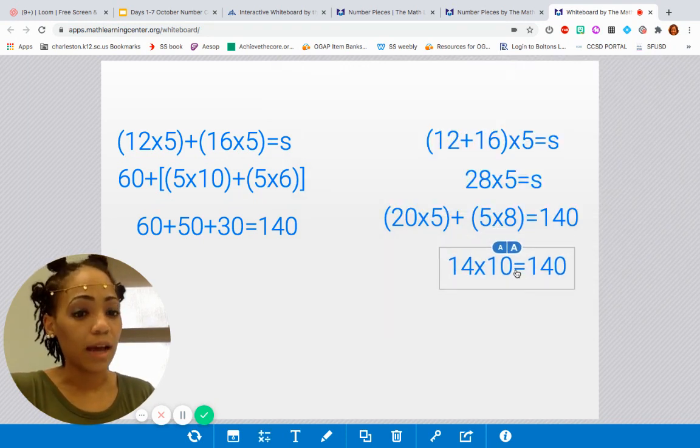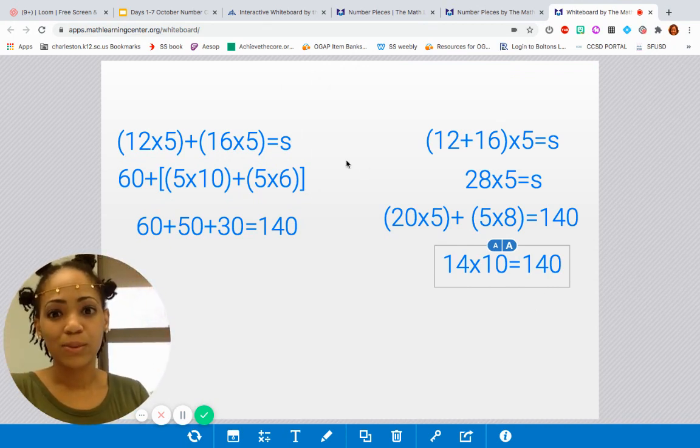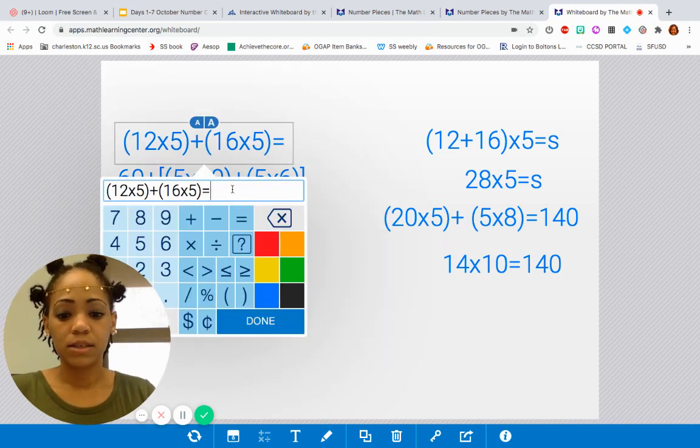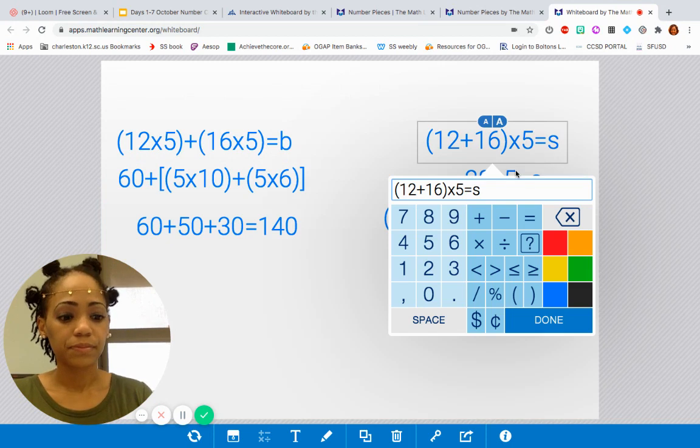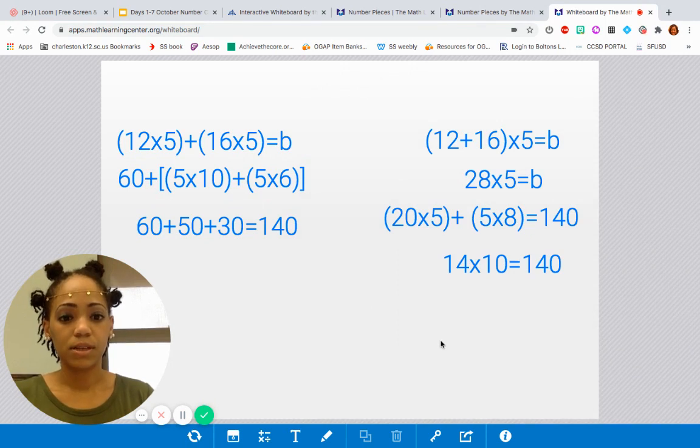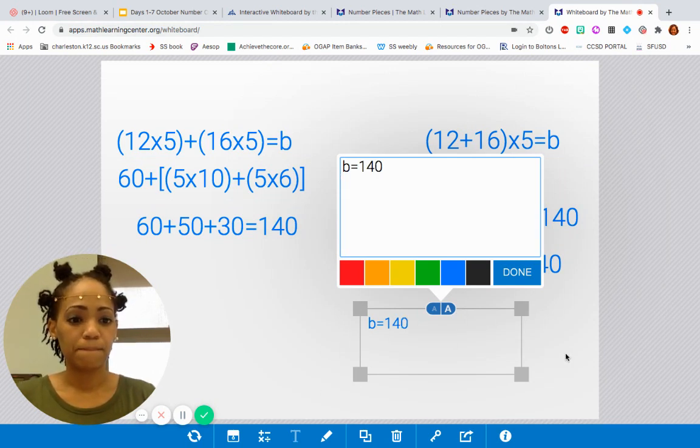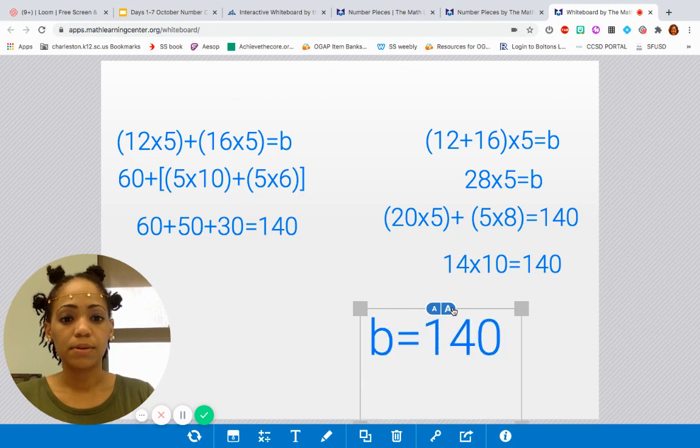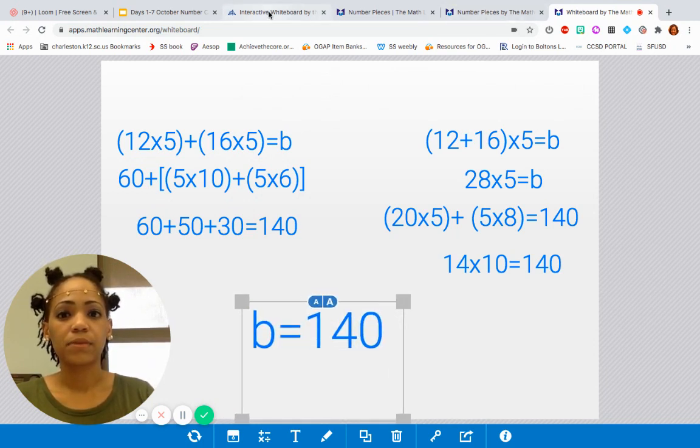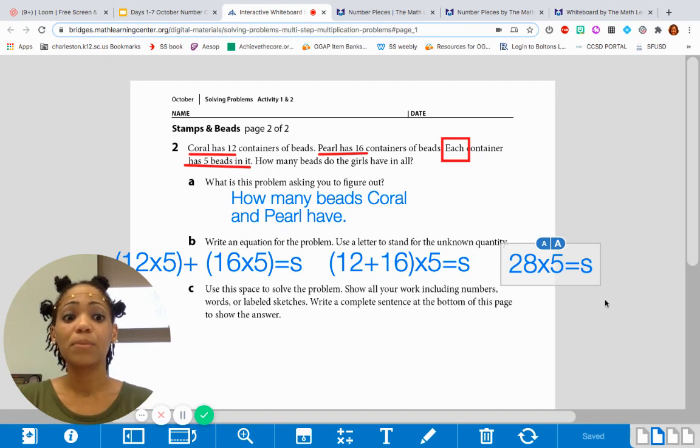So our answer, what was the question asking us for? How many beads? So really this should have been a B instead of an S. How many beads do they have all together? 140 beads. Awesome. So I'm going to write B equals 140. All right. You guys did an awesome job. That is our answer. So with all the work that we just did, hopefully you guys are seeing the connection between all three of these problems. And now I could add a fourth one because we doubled and halved.